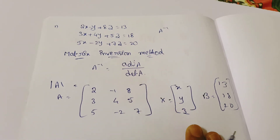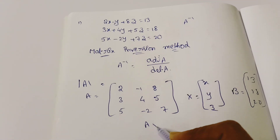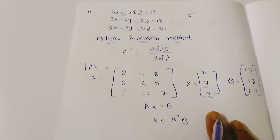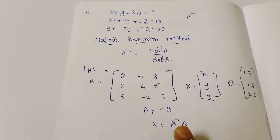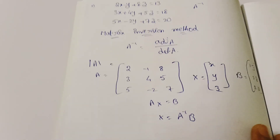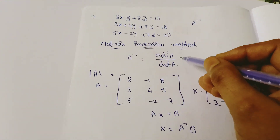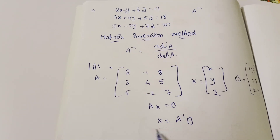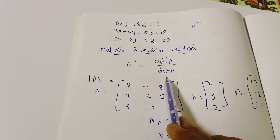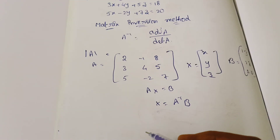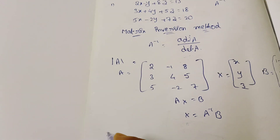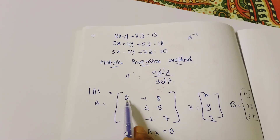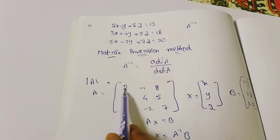In the matrix inversion method, the formula is AX equal to B, so X equal to A inverse into B. We need to find A inverse, then multiply by B.